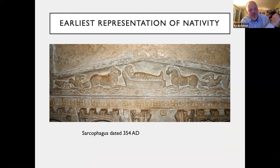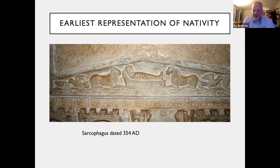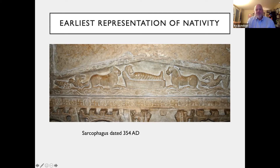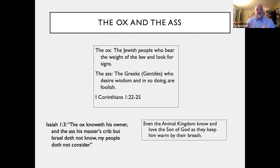Inside this church is another sarcophagus, and this is the oldest depiction we have of baby Jesus, dating to about the year 354. Notice baby Jesus — we don't have Mary, we don't have Joseph, we don't have the Magi, we don't have the shepherds. But what we do have is an ox and a donkey. This was very important in the ancient world. It really comes from two passages of scripture important to ancient Christians: Isaiah chapter 1, verse 3 — 'The ox knoweth his owner, and the ass his master's crib. But Israel doth not know, my people doth not consider.'